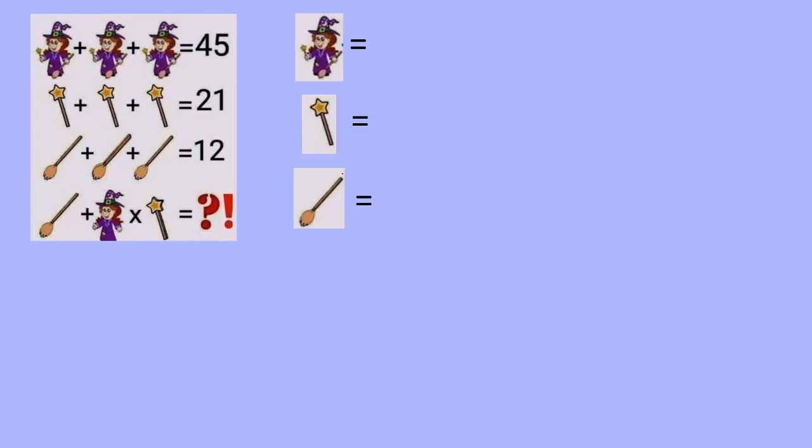So what we're going to have to do is figure out what a witch is, a fully loaded witch with a wand and a broom, what a wand is, and what a broom is. All right, so let's take a look at the first equation.